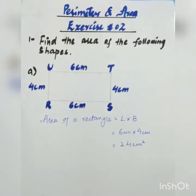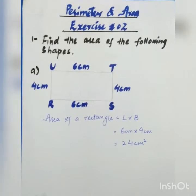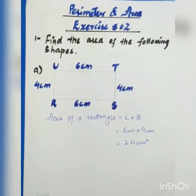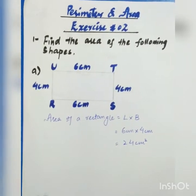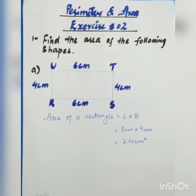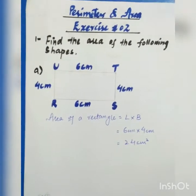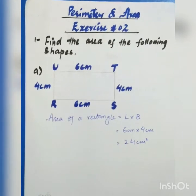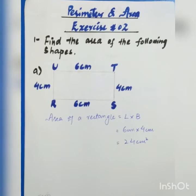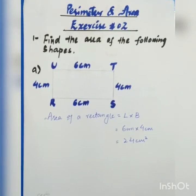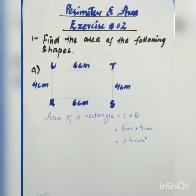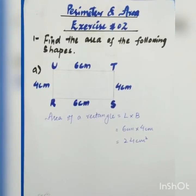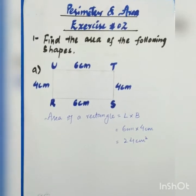Now we will solve the questions. Question number 1: Find the area of the following shapes. Part A — we have a rectangular shape and we have to find its area. The formula is Area = L × B (length into breadth). The length is 6 centimeters and the breadth is 4 centimeters. We multiply 6 with 4: 6 fours are 24. So the area is 24 centimeters square.